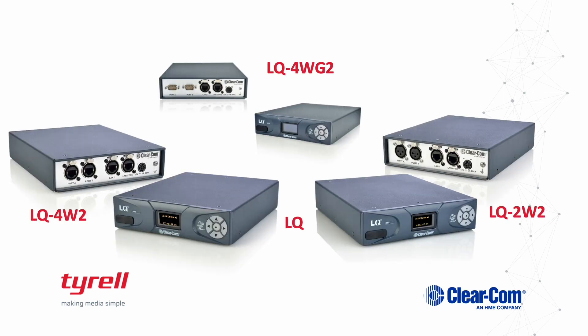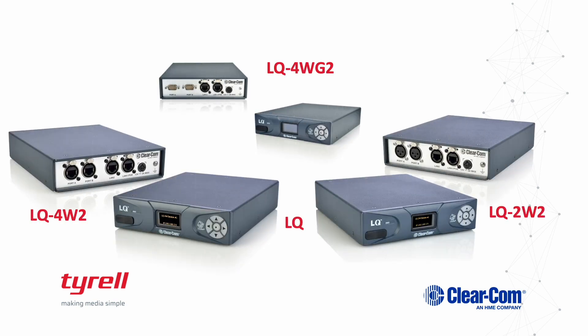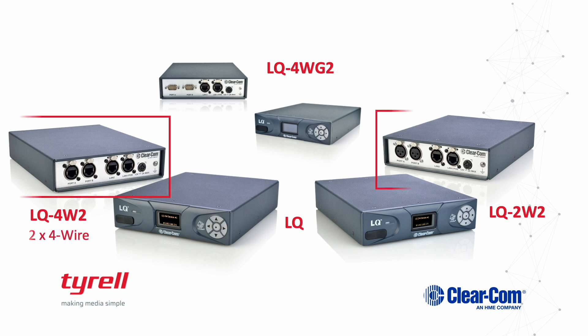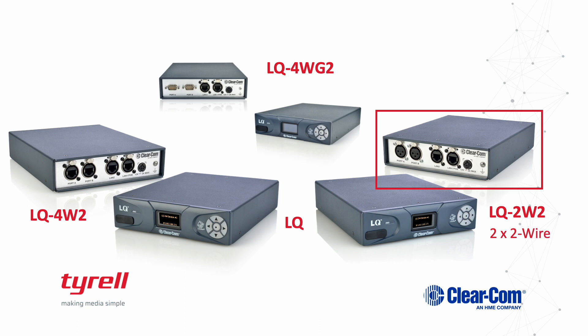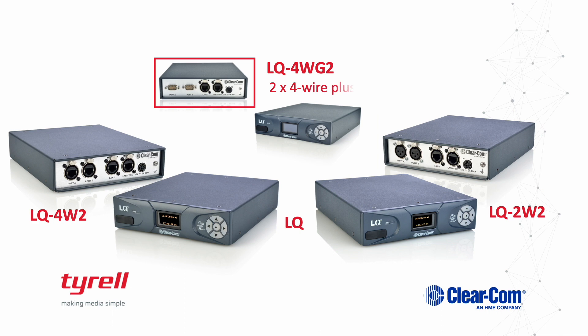You have the one new half rack throw down units: namely the LQ4W2, an interface designed to accommodate two 4-wire connectors; the LQ2W2, an interface designed to accommodate two wire connectors; and the LQ4WG2, an interface designed to accommodate two 4-wire connectors and two GPIO ports, which can be used with two-way radios.